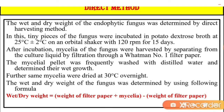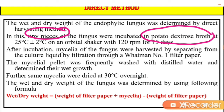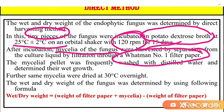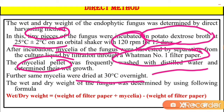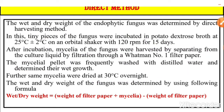To determine the wet and dry weight by the direct method: first, take tiny pieces of the endophyte fungi and place them in potato dextrose broth, incubate at 25°C ± 2°C on an orbital shaker at 125 rpm for 15 days. After 15 days, harvest the mycelia using Whatman No. 1 filter paper. Separate the mycelial pellet from the filtrate, wash the pellet with distilled water repeatedly, dry at 30°C overnight, then determine weight and dry weight using the formula: wet/dry weight = (weight of filter paper + mycelia) − (weight of filter paper).